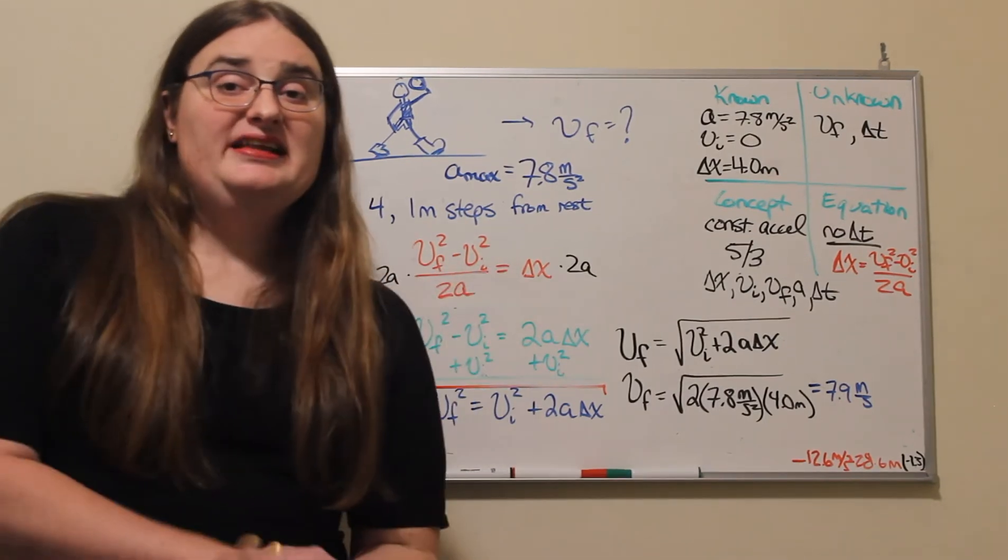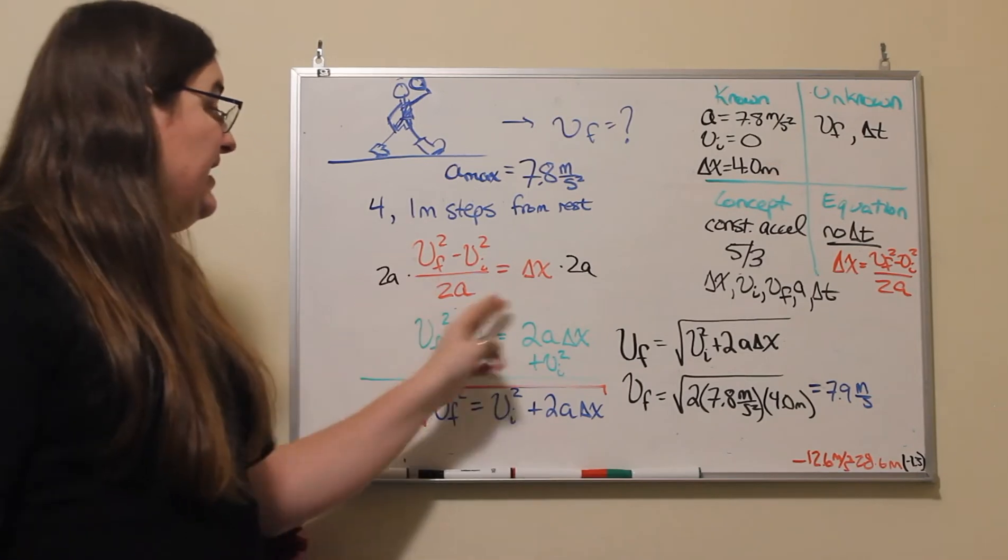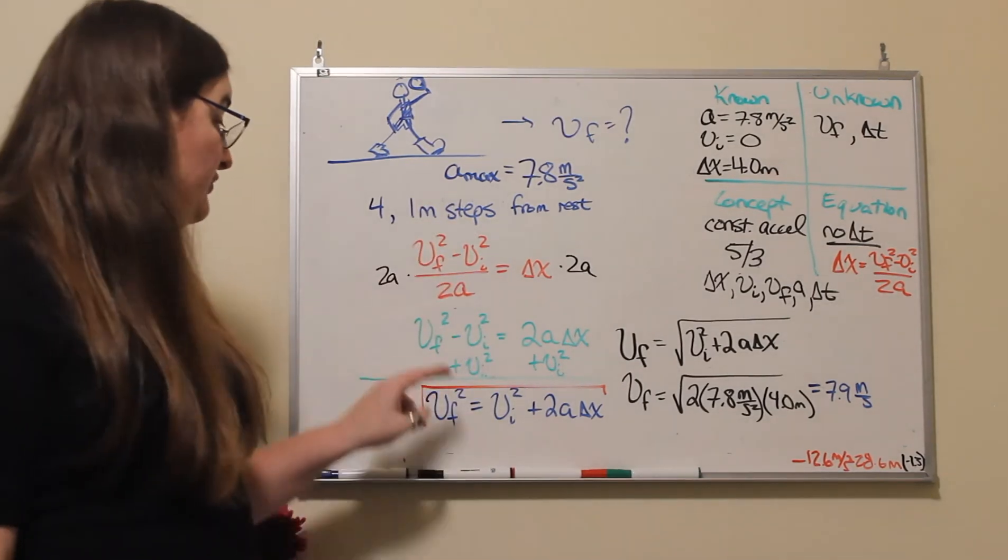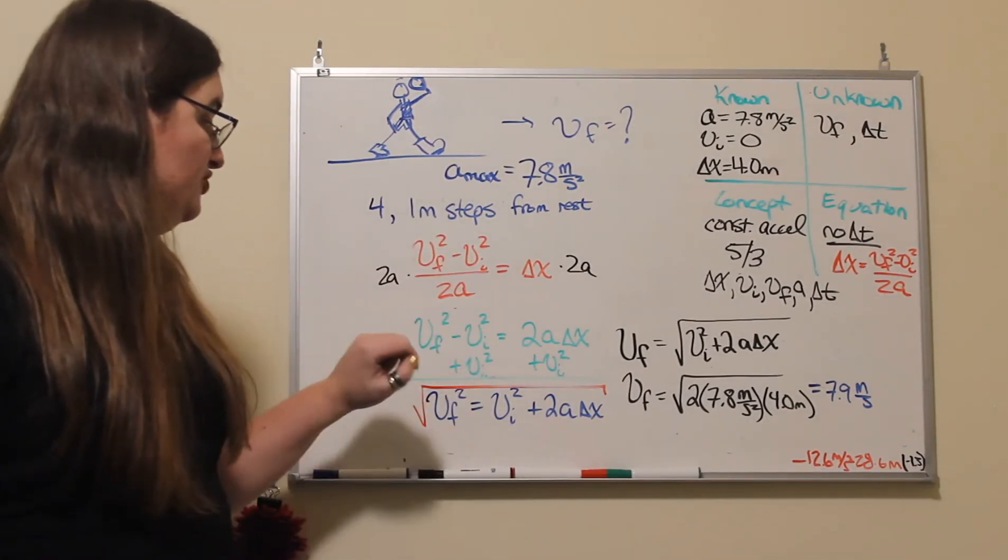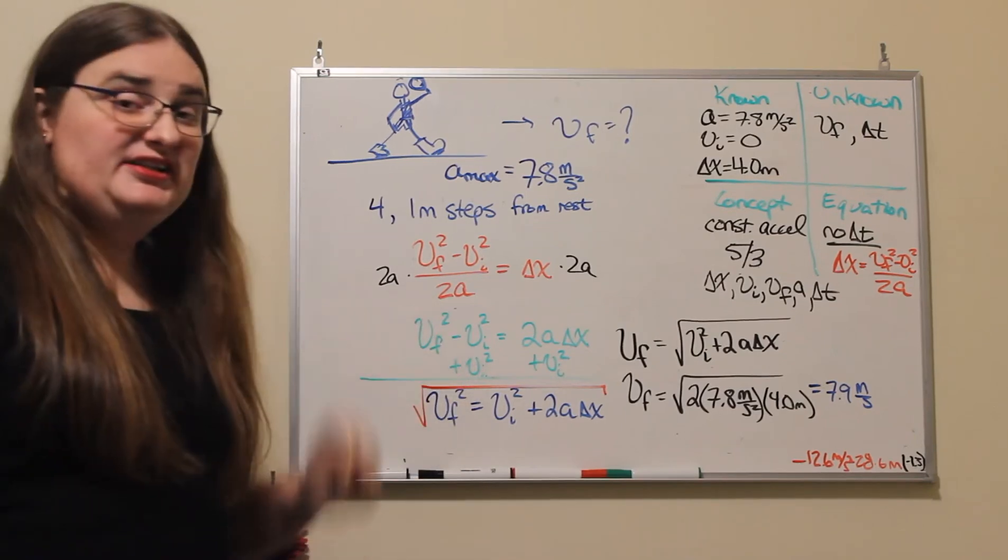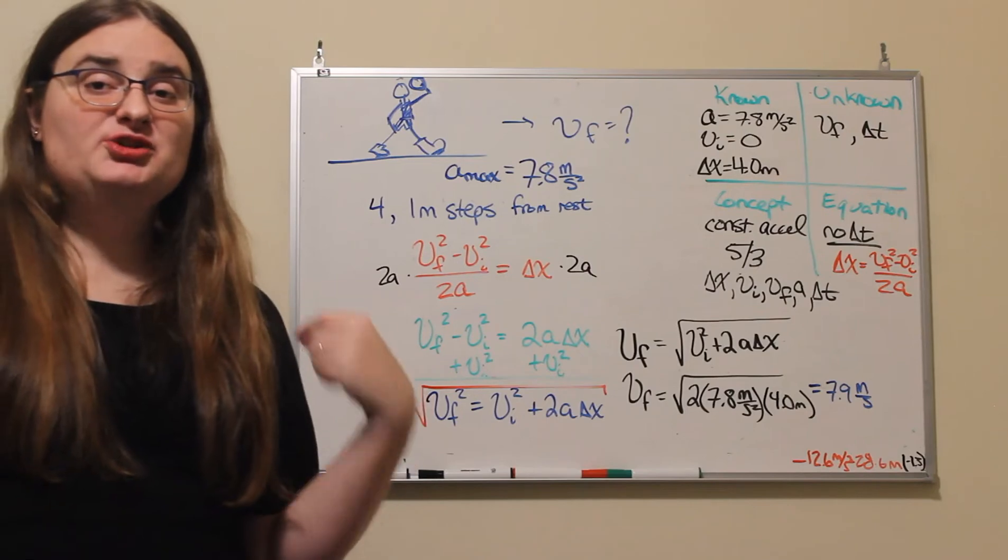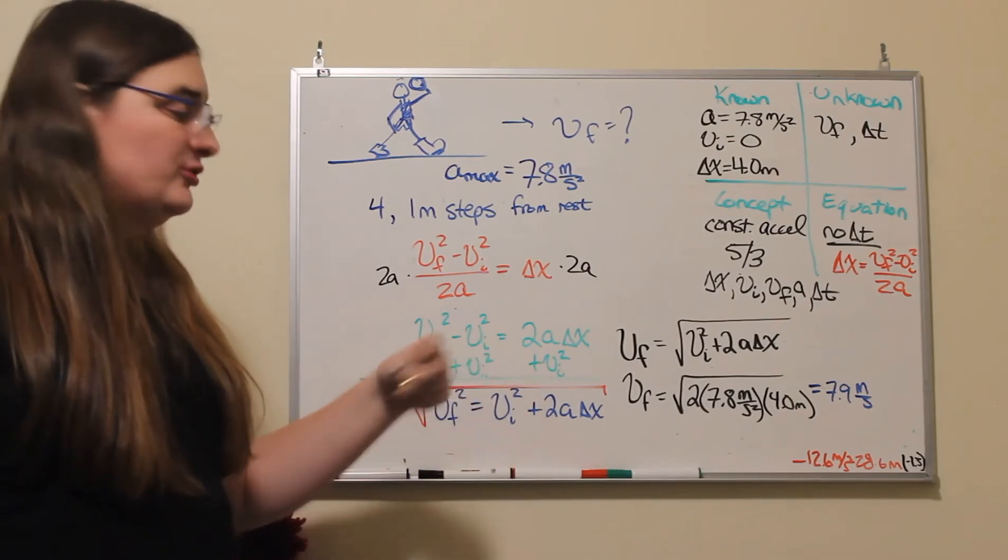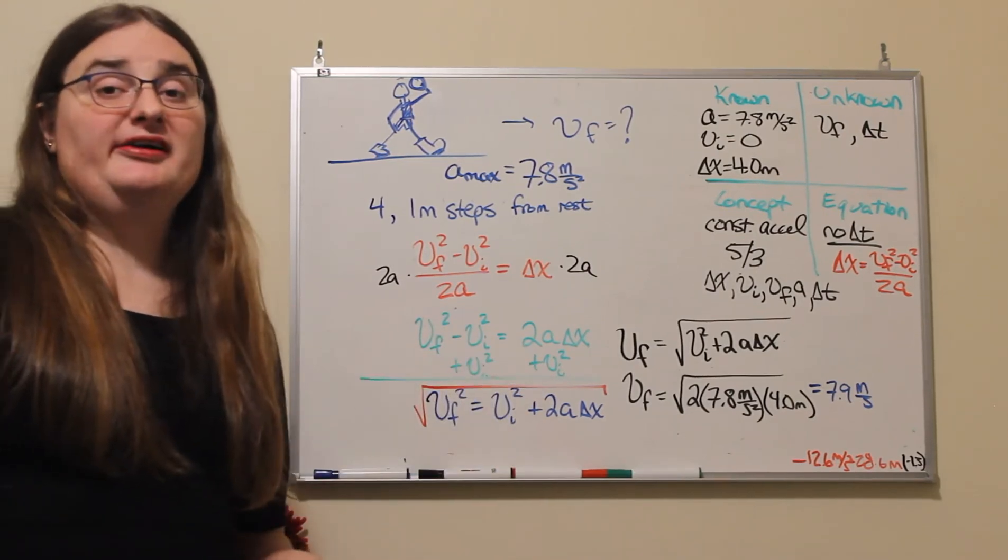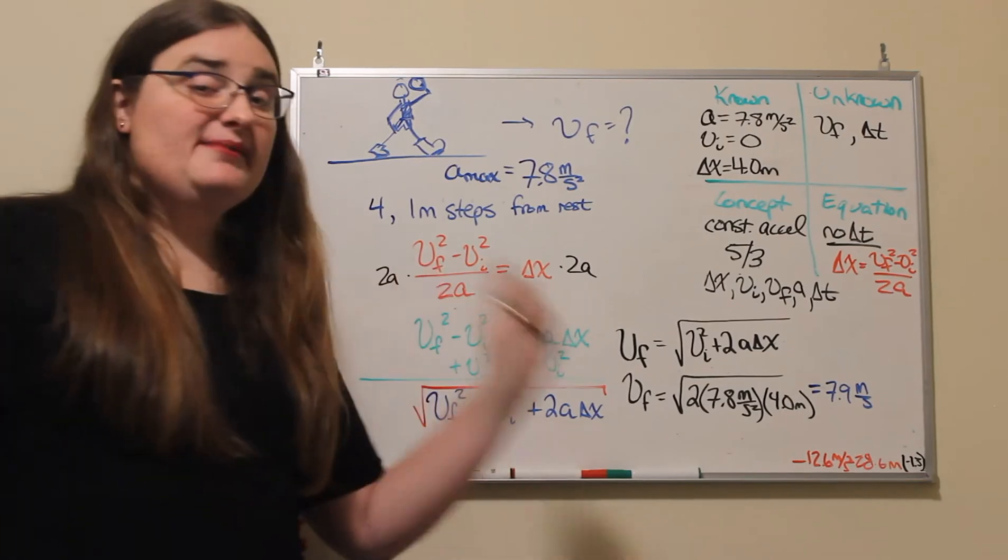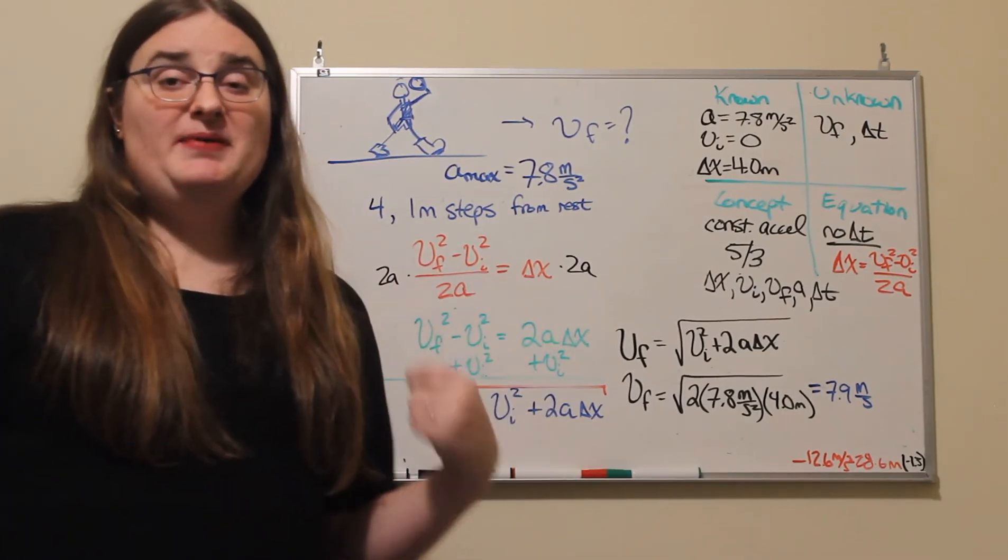So now, to isolate that v final term, I can add v initial squared. So v initial squared minus v initial squared cancels out. That leaves me v final squared is equal to v initial squared plus 2 times my acceleration times my displacement.